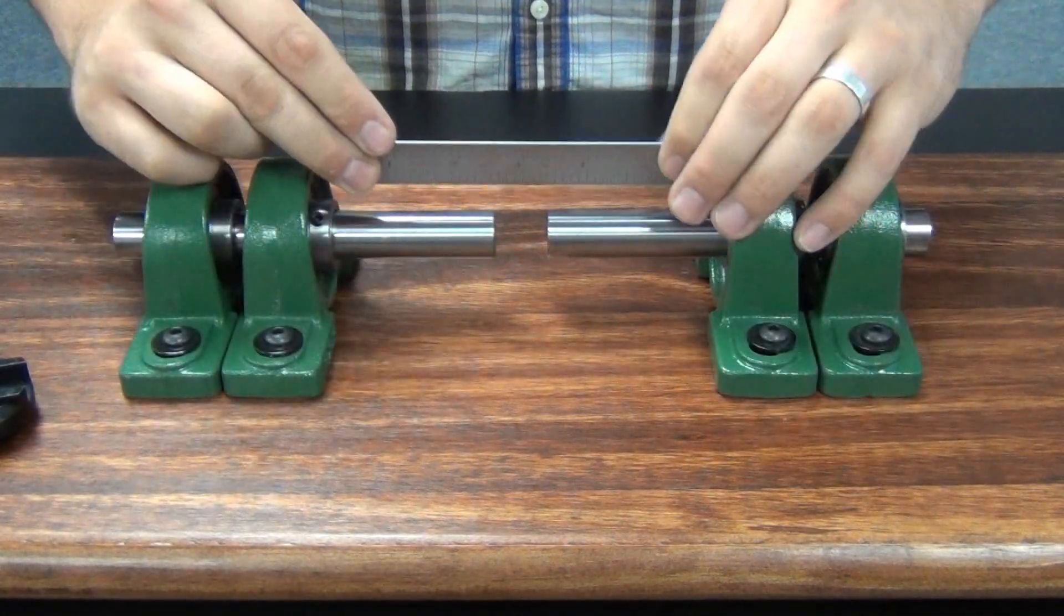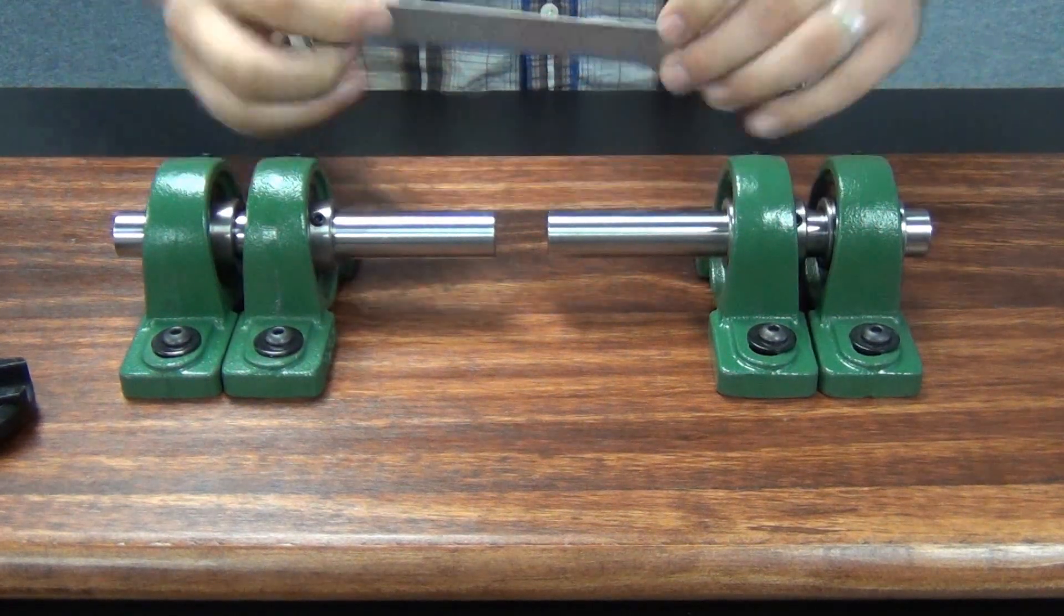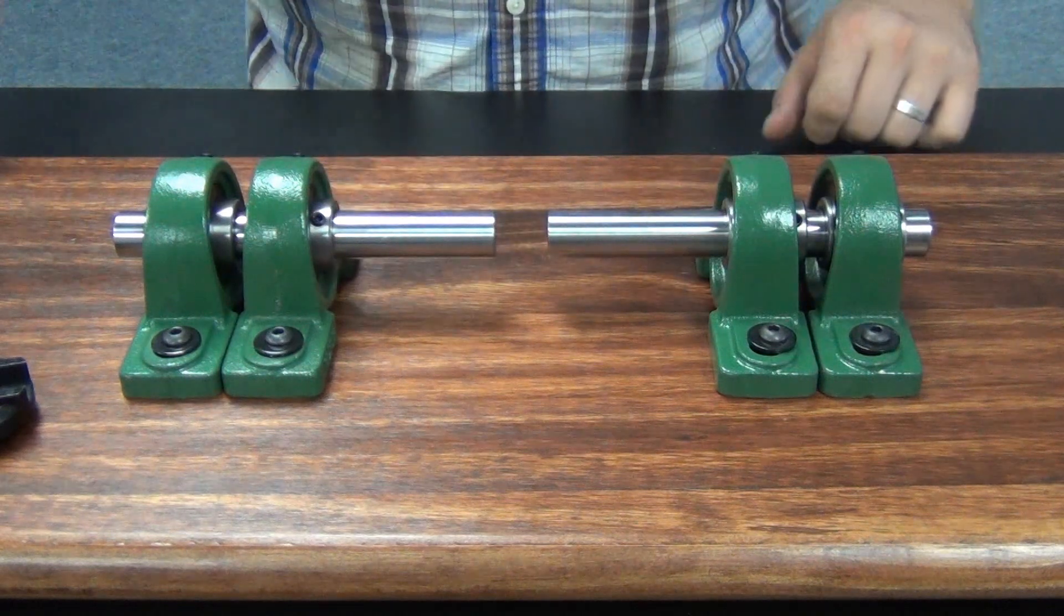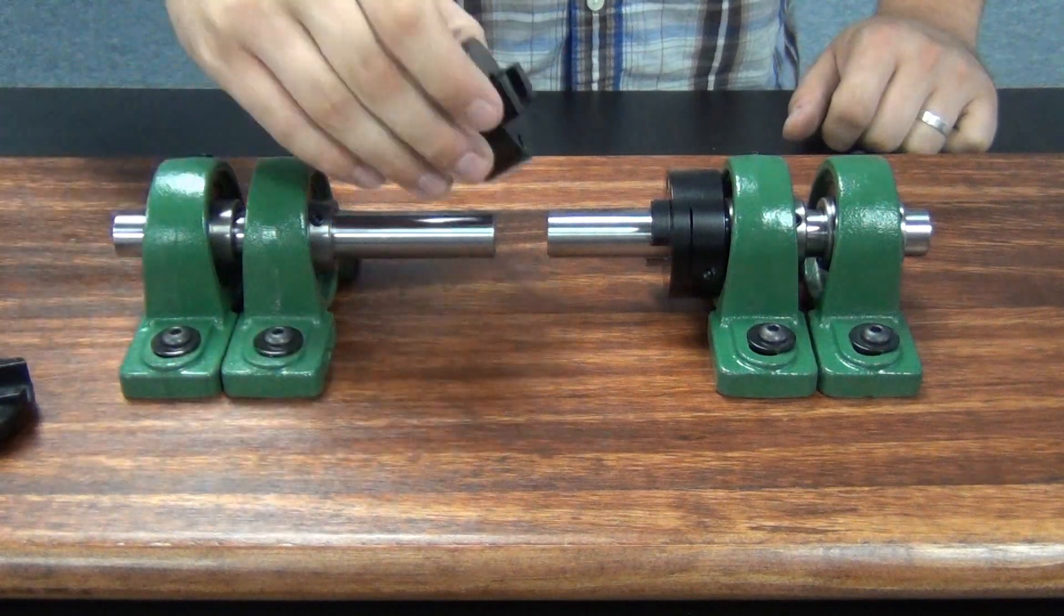We are ready to begin. First, assure the misalignment between shafts is within the Coupling's rating. Complete misalignment information is available on Ruland.com. If your shafts are fixed, make sure the minimum distance between the shafts is the hub length.